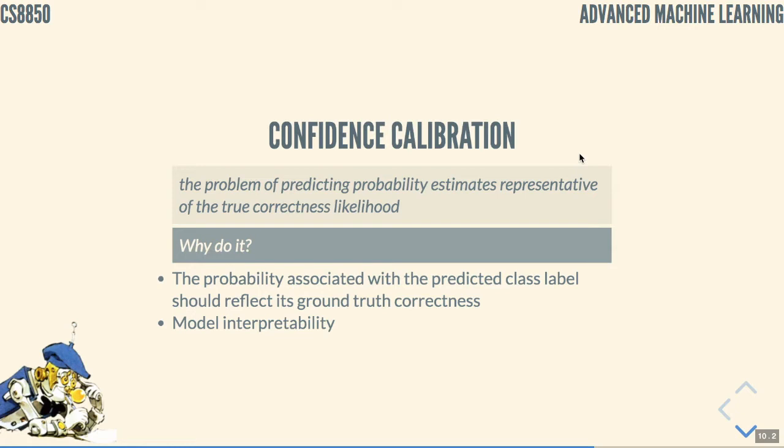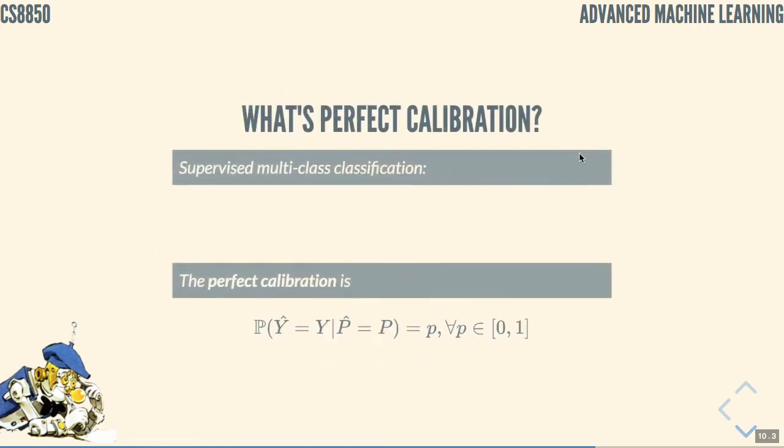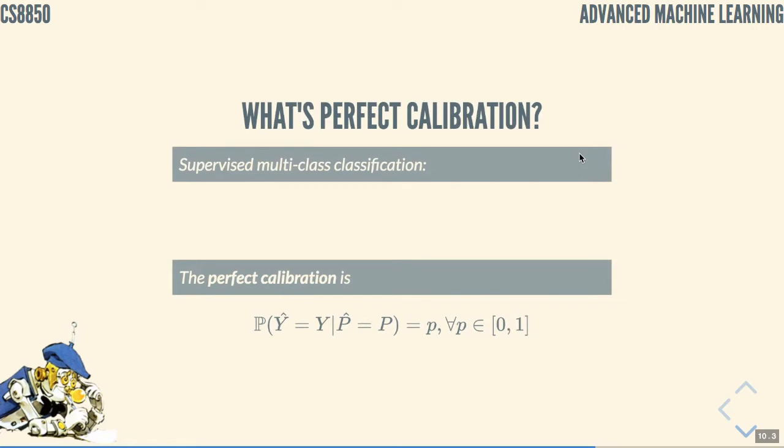We want the model's confidence to be true to the accuracy of the model. Speaking about that calibration and what is the perfect calibration, let's consider supervised classification problem. Multidimensional input data from multiple classes follows the joint data label distribution that can be decomposed into the data prior, evidence, as you know, and conditional, which in this form, if you remember, we call it posterior.